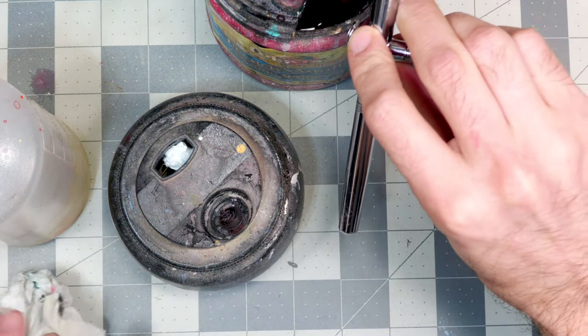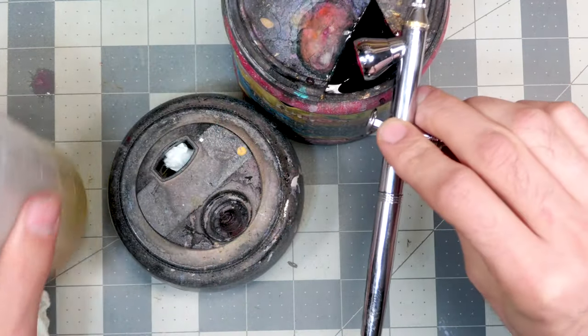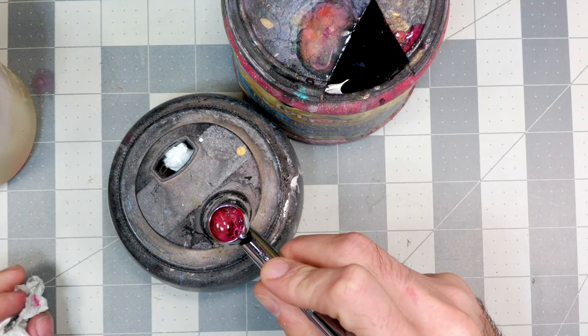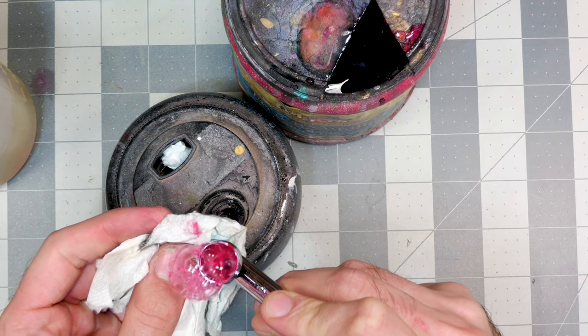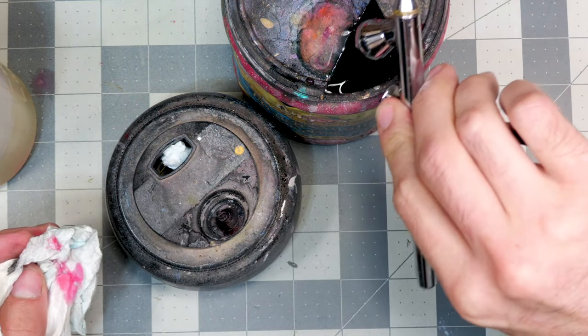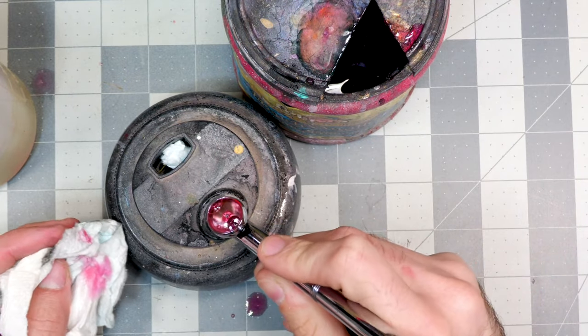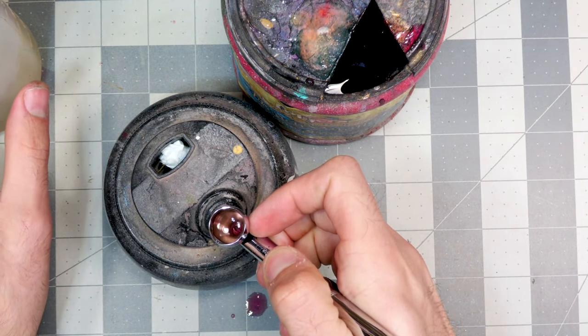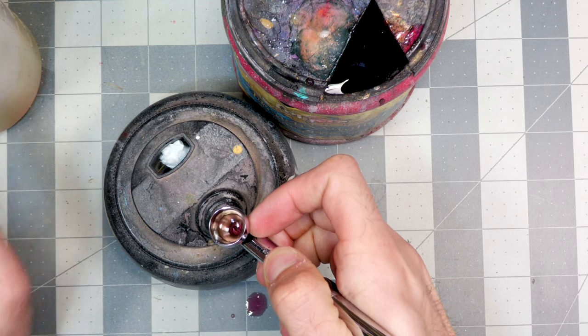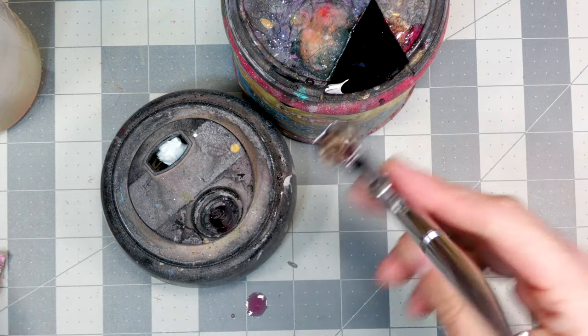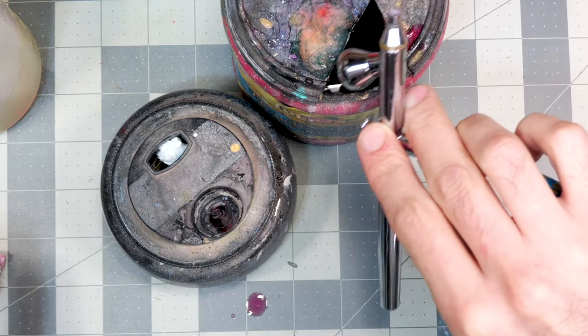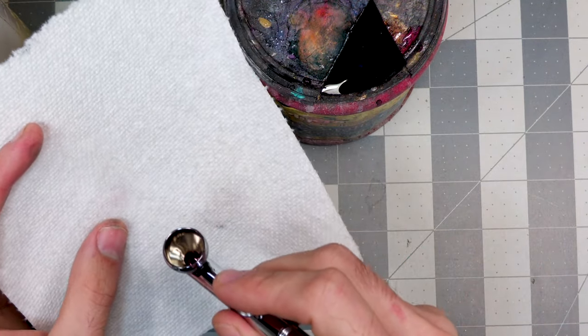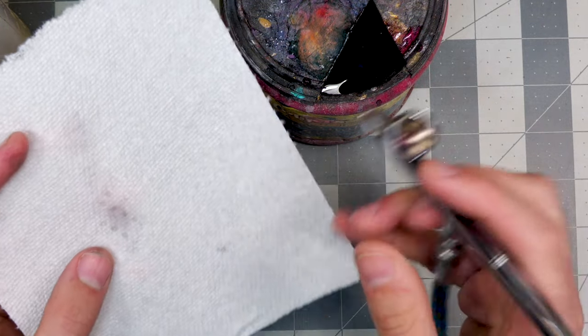So I'll do that. Dump it into the cup. Hit it with some more water. Run it through here. Kind of backtrack it a little bit. And if I did it properly, there should not be any red paint left inside the airbrush.